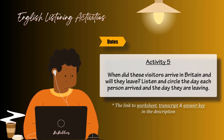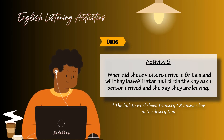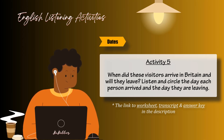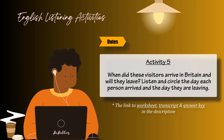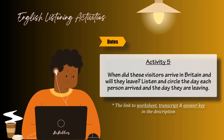Activity five. When did these visitors arrive in Britain, and when will they leave? Listen and circle the day each person arrived and the day they are leaving. One. So, how long have you been in Britain? We arrived on the fourth, and we're staying until the twentieth. Two. Have you been here long? Just five days. We arrived on the tenth. And how long will you be here? Until the twenty-second. Three. Have you been here long? Not long. We arrived on the fifth. Will you be staying long? Until the nineteenth.